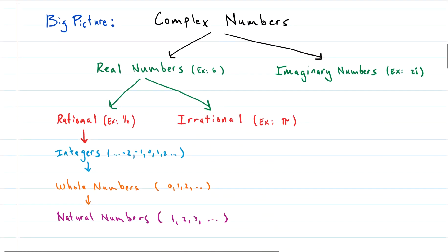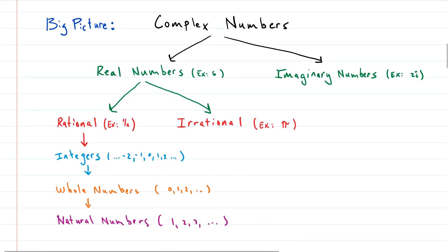Alright, complex numbers. Kind of a big picture. Complex numbers really includes everything that you've discussed so far in algebra. So complex numbers is the big umbrella term that fits everything below that you see here on the screen. Everything below you see here on the screen is a complex number.